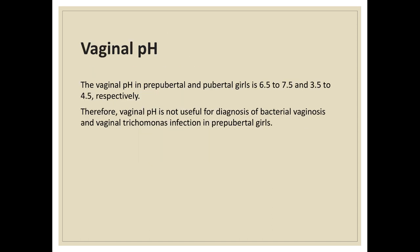We can also use vaginal pH when performing a vaginal swab. The vaginal pH in pre-pubertal and pubertal girls is 6.5–7.5 and 3.5–4.5 respectively. Therefore, vaginal pH is not really useful for the diagnosis of bacterial vaginosis and vaginal trichomonas infection among pre-pubertal girls.